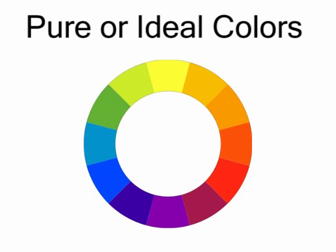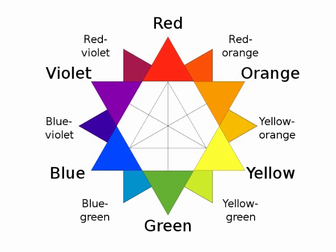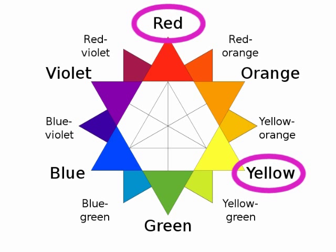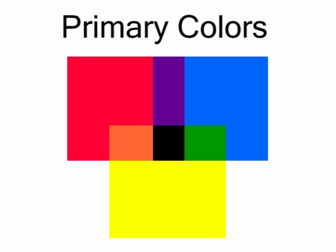The foundations of color theory were built around the concept of pure or ideal colors. It was discovered that three of these pure colors can be used to create a large number of other colors by mixing them in various ratios. These colors that are mixed to create other colors are called primary colors.